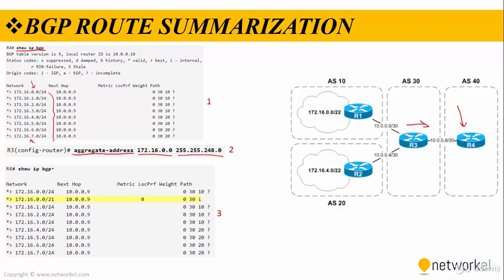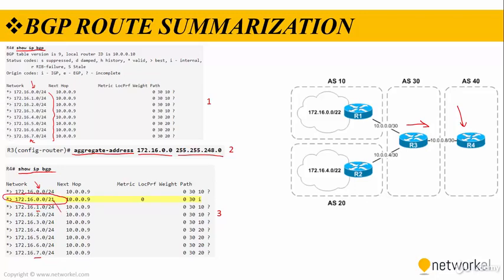After that, when we type show IP BGP on router 4 again, we are going to see routes 0 through 7 again, but also an aggregate route which has a subnet mask of slash 21 as well.